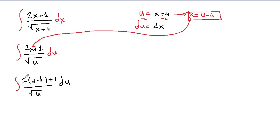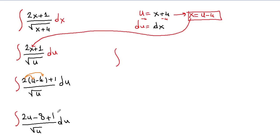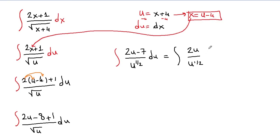Now we're going to distribute 2 into the parenthesis: 2 times u is 2u, and 2 times negative 4 is negative 8, giving 2u minus 8 plus 1, so we have 2u minus 7 over square root of u, du. We can write square root of u as u to the 1/2. Now we're going to separate the integrals — we have one common denominator for both numerator terms — so we write the integral of 2u over u^(1/2) du, plus the integral of negative 7 over u^(1/2) du.